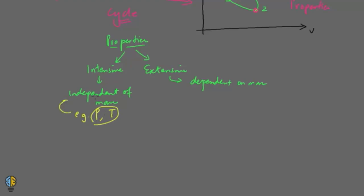Next are extensive properties. Volume is a property which depends upon the mass of the system. Then we have energy of the system — that is also dependent upon the mass. So if you increase the mass of the system, the values of the extensive properties also increase.